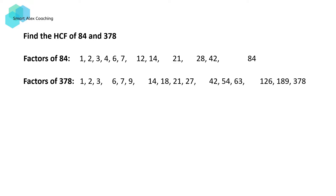So in this list, our common factors are 1, 2, 3, 6, 7, 14, 21, and 42. And since 42 is the highest number, it becomes the highest common factor or HCF of 84 and 378.